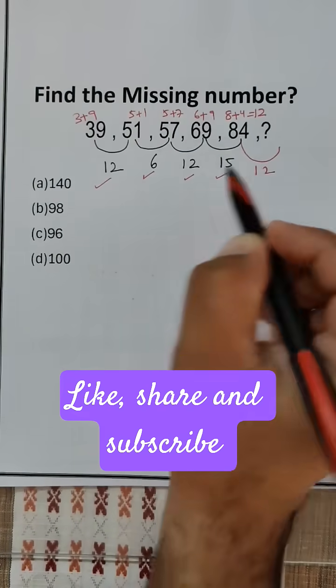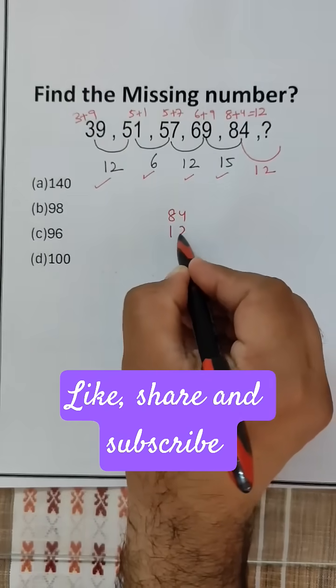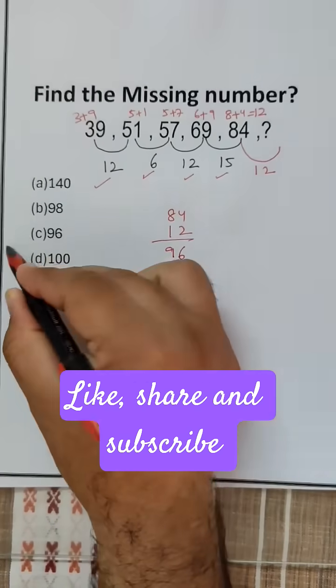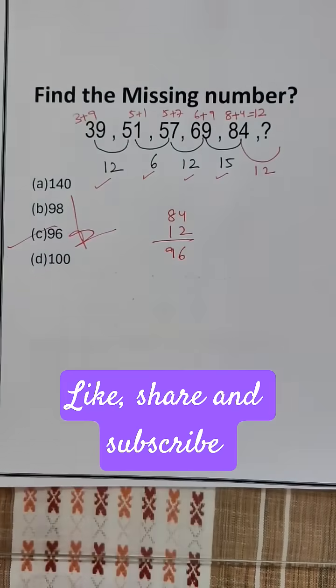So the missing number will be 84 plus 12, which is 96. Option C is the correct answer.